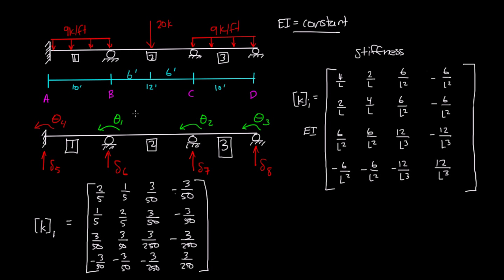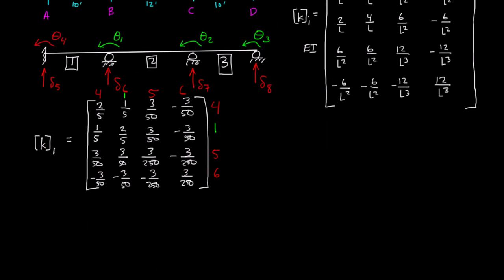I'm going to label the rows and columns according to our left-to-right rule. I'm going to look at element 1 and label the rows and columns depending on the types of degrees of freedom element 1 has. Element 1, from left to right, starting with rotations, we have 4 and 1, then moving to verticals left to right, we have 5 and 6. So I'm going to label the rows and columns 4, 1, 5, 6 — writing the 1 in green. That's for element 1.